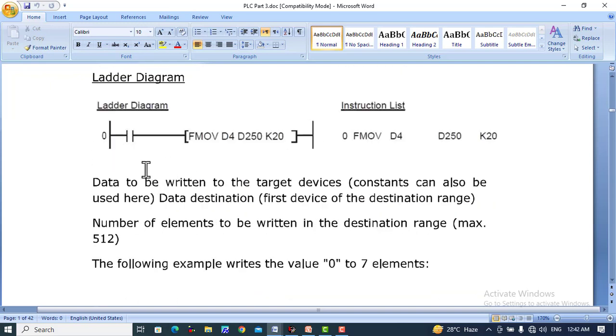For example we have a program with input using FMOVE instruction D4, D250, and K20. Data to be written to the target devices - constants can also be used here. Data destination: first one is the source, the second one is the destination, and third one is the instruction for how many elements to be moved.